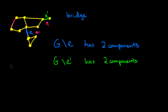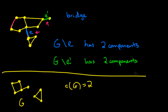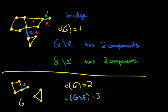Now if the original graph was already disconnected, then a bridge edge will simply create more components. Let's take a look at such an example. Say this is our new graph G, and the number of connected components of G right now is 2. If we remove any edge along these cycles, it still has 2 components. However, if we remove this edge here, which I'll call F, and count the number of components, we'll have this 4-cycle, this 3-cycle, and a single isolated vertex — so 3 components.